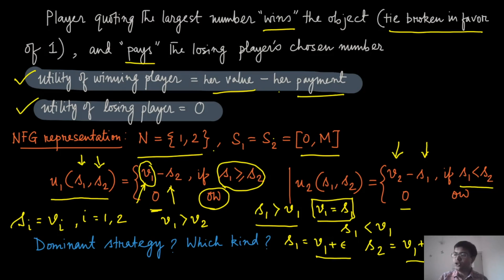In both cases — whether Player 1 over-reports or under-reports their value — it is better for the player to report exactly their valuation. Therefore, s_i = v_i is a dominant strategy.